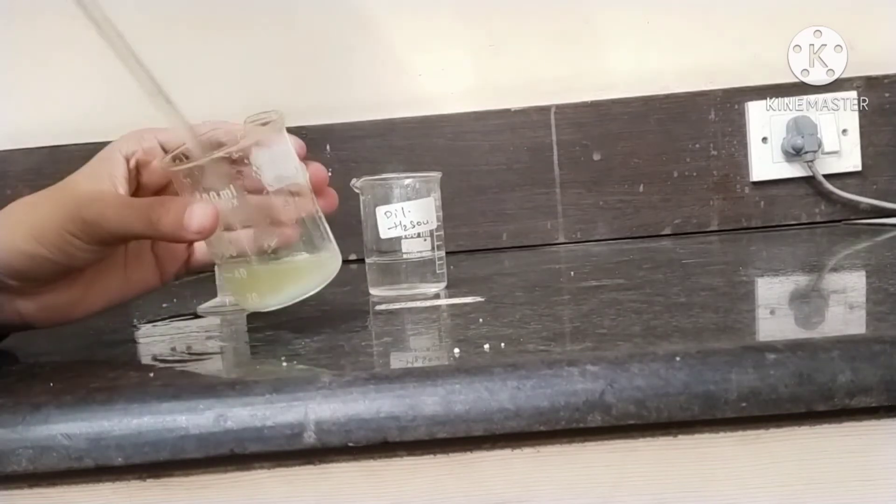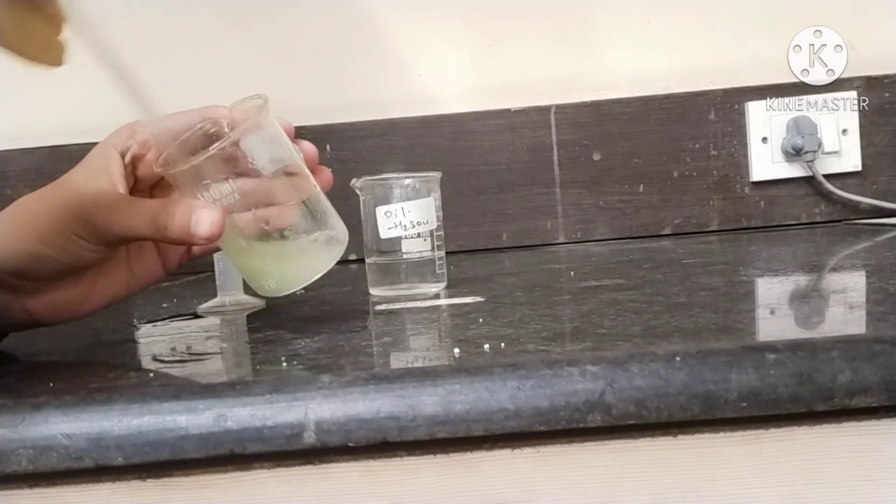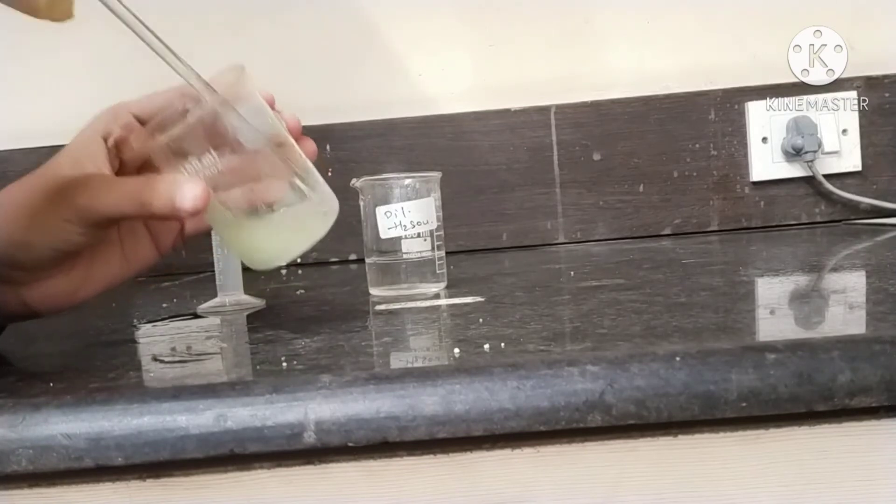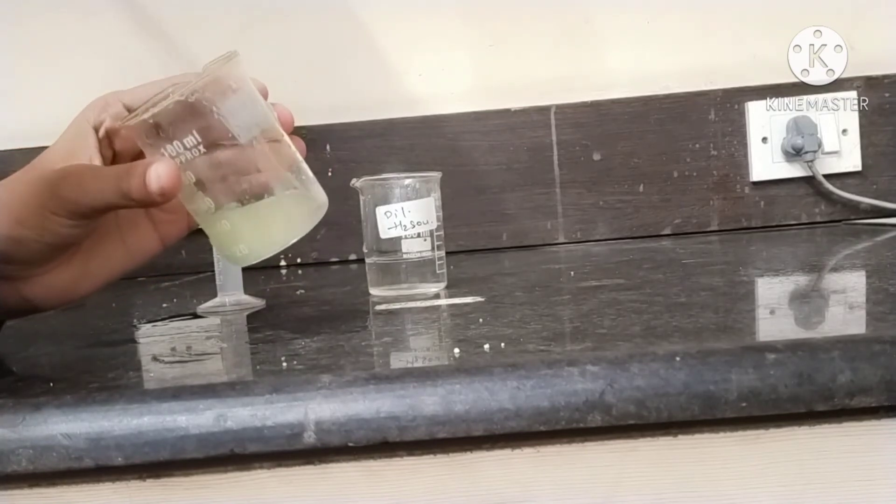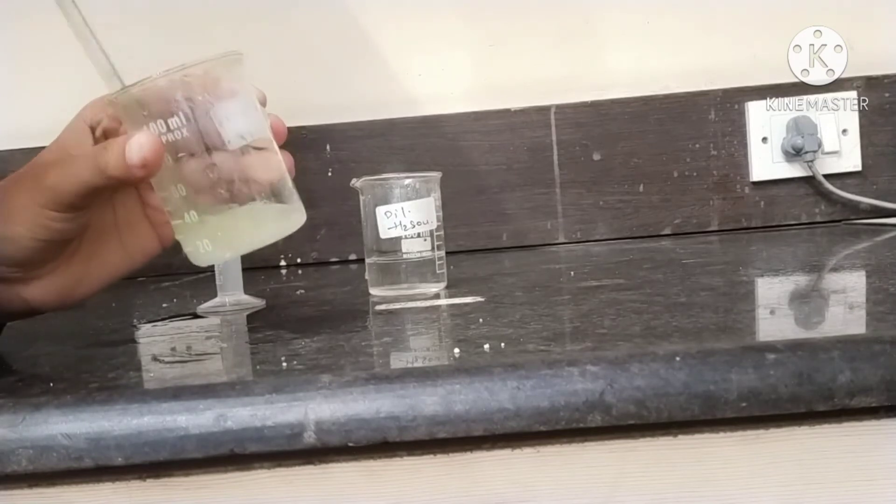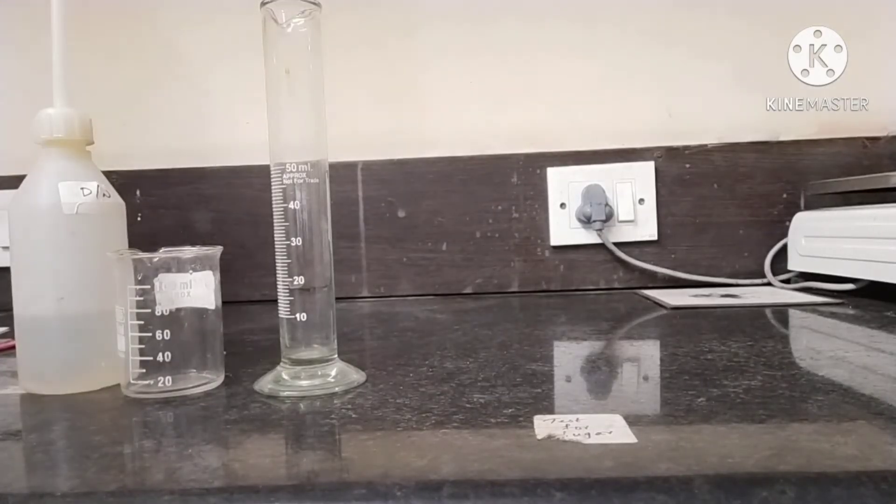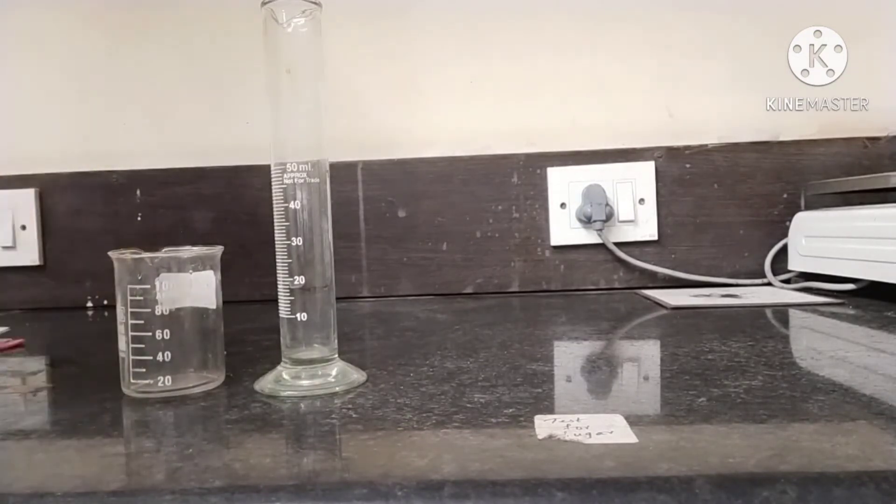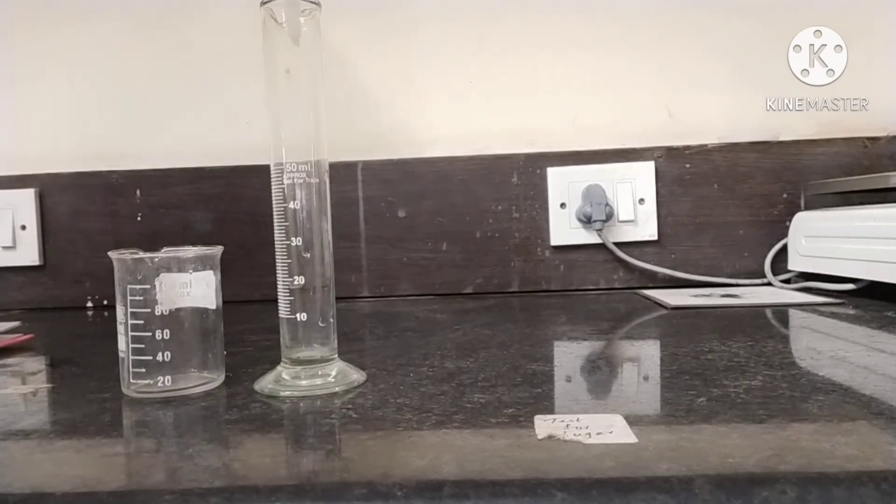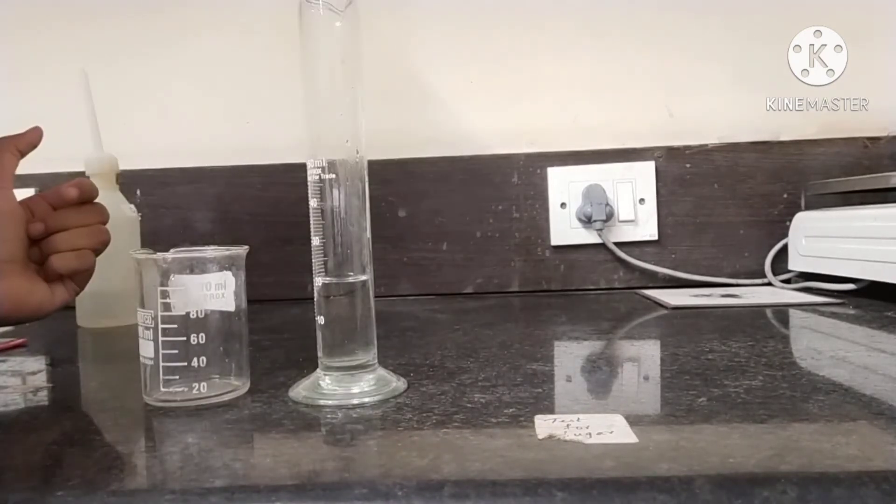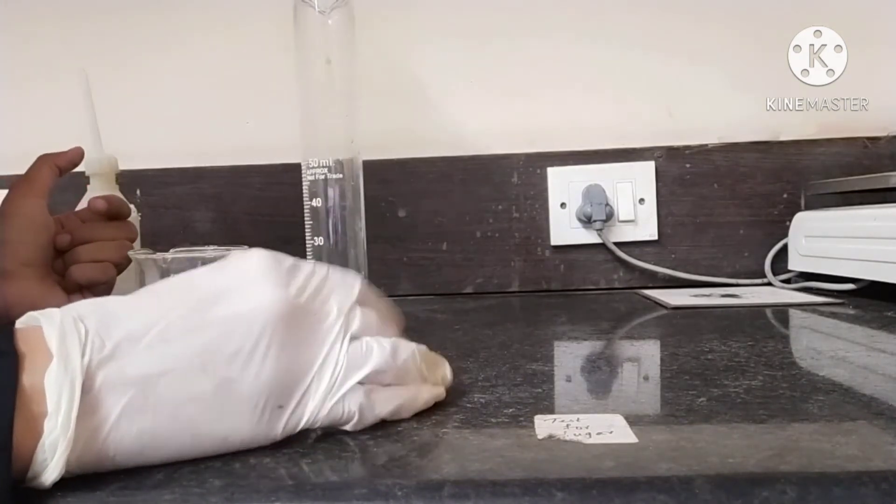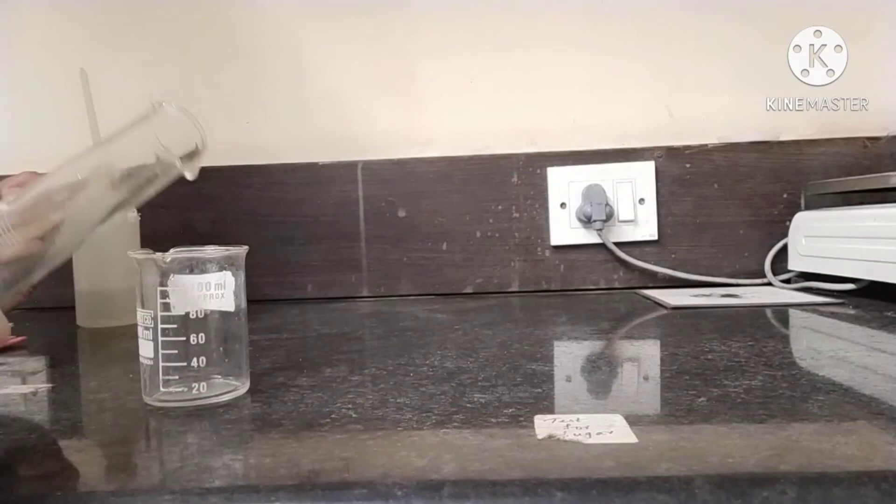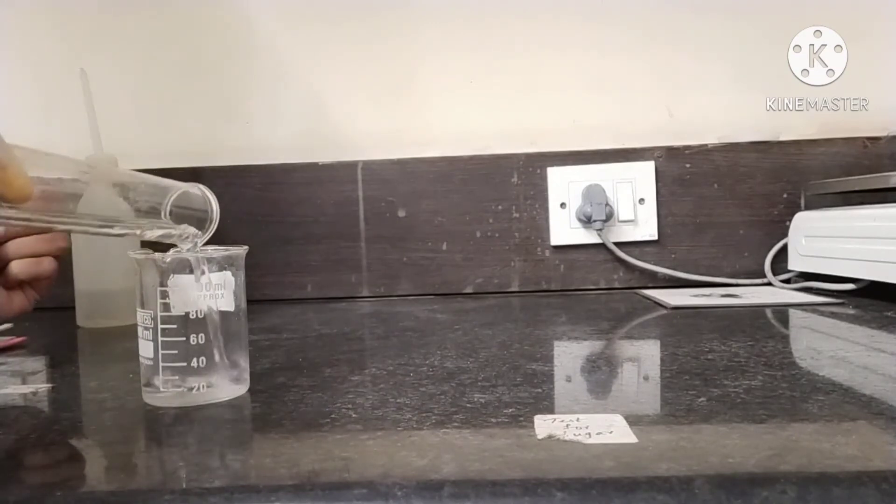Now, with the help of a glass rod, stir this solution like this. Now move to the next step. Take a small beaker and add 20ml of distilled water. Pour 20ml of distilled water with the help of a measuring cylinder into a clean beaker like this.